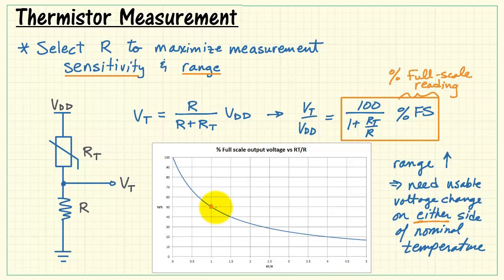As another example, if we pick the fixed value resistance to be the same as the thermistor resistance at the nominal temperature, then we have an equal amount of range on either side. That is, we can swing up to 100% and go down to 0%, and the nominal temperature is right there in the middle.